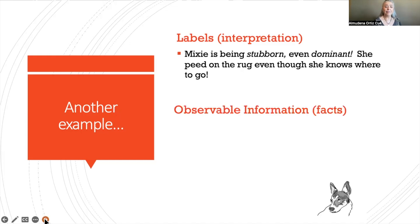Instead, if we look at the facts, we can see that Mixie was sniffing the rug because she needed to eliminate, but she couldn't go outside. So if you know a little bit about behavior in this sense, when a dog starts sniffing a substrate, it means that most likely it needs to eliminate. So if we're aware of these facts, and we know how to interpret that particular behavior in that context, we know that the dog needs to go outside. So now we can do something about it.